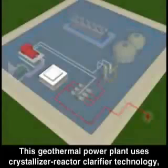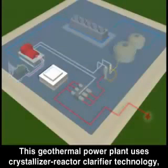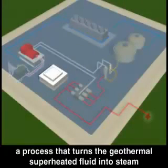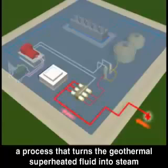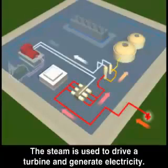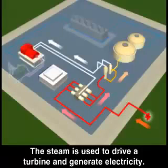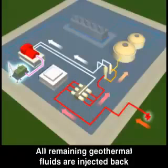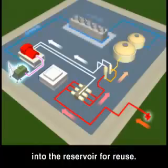This geothermal power plant uses crystallizer reactor clarifier technology, a process that turns the geothermal superheated fluid into steam while removing solids from it. The steam is used to drive a turbine and generate electricity. All remaining geothermal fluids are injected back into the reservoir for reuse.